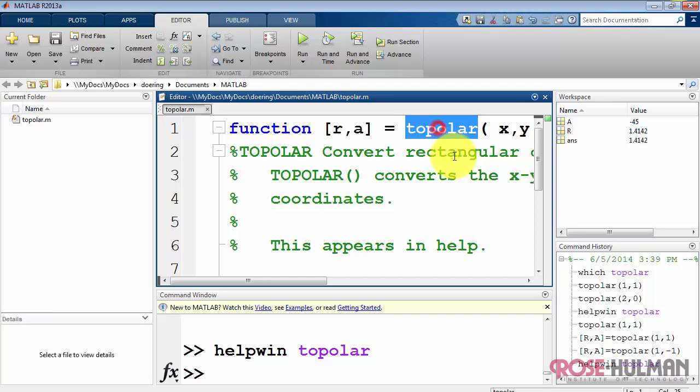Finally, I'd like to point out that the function name is not required to be the same thing as the file name, but it is strongly recommended that you do it that way. So my M file is called toPolar.M, and that should be the name of the function also.